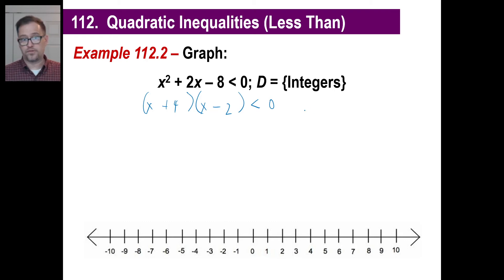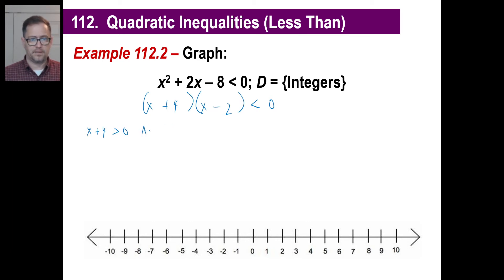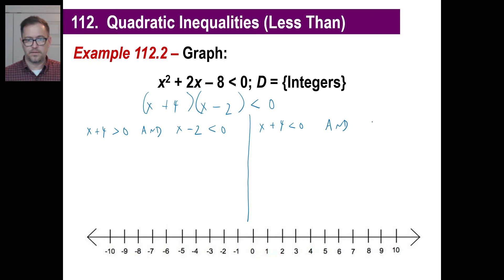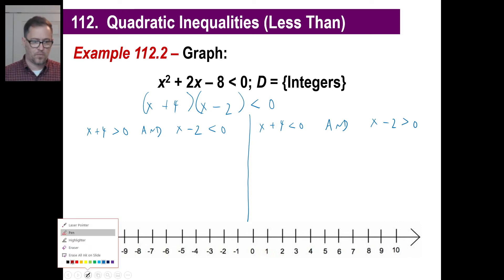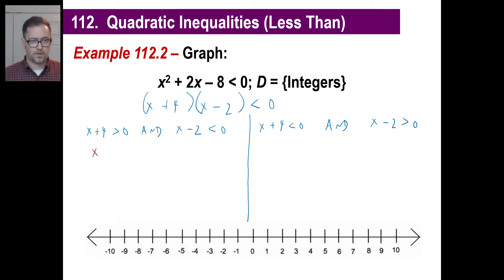Now we have two possibilities. A positive times a negative gives a negative, which is less than zero, or a negative times a positive. Case one: x plus four is greater than zero AND x minus two is less than zero. Solving those gives x is greater than negative four AND x is less than two. Don't forget the 'and' — it has to be 'and'.